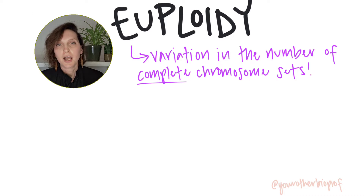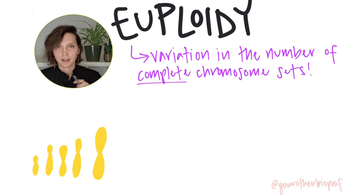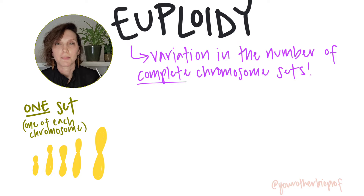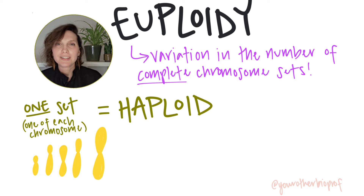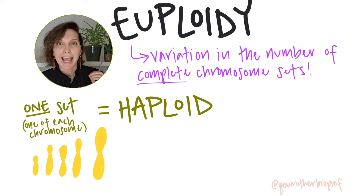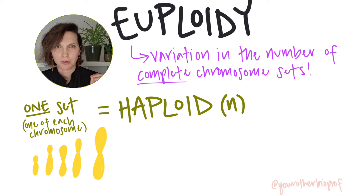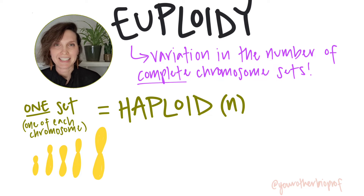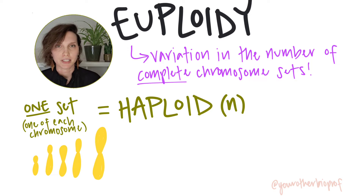Cells that have one copy of each chromosome are described as haploid, and in humans these would be the gametes — the sperm and the egg. The haploid number, which we can abbreviate as n, tells you how many chromosomes are present within that set — how many unique chromosome types there are for that particular cell type.